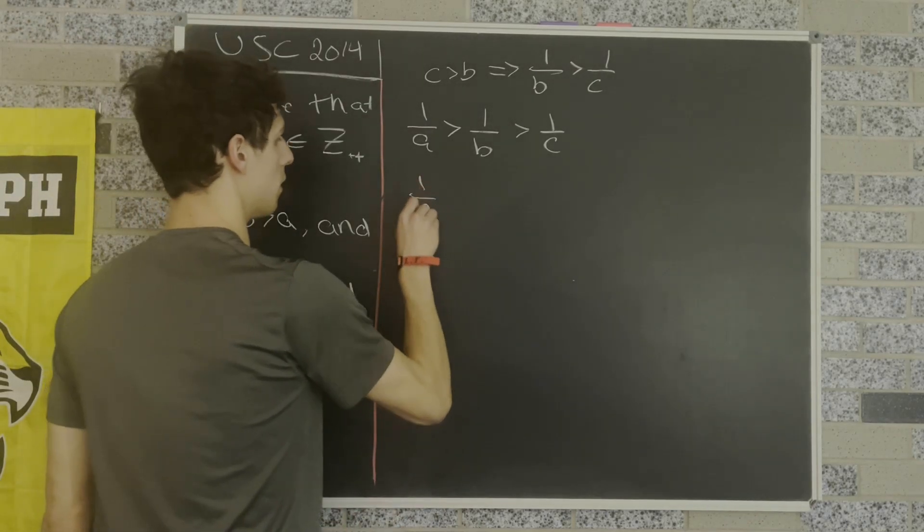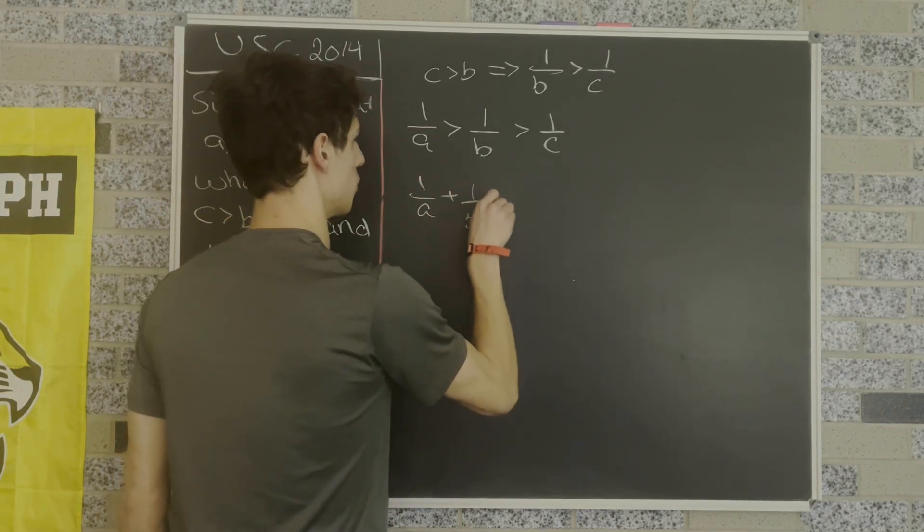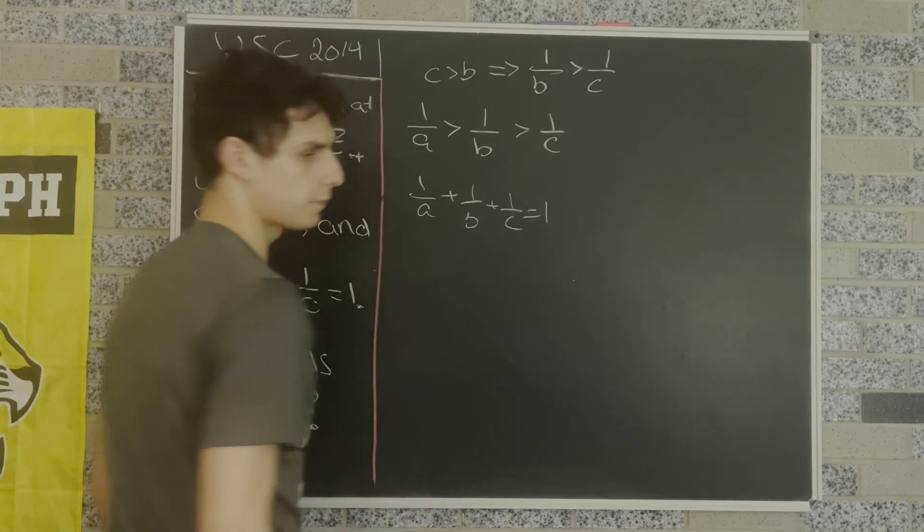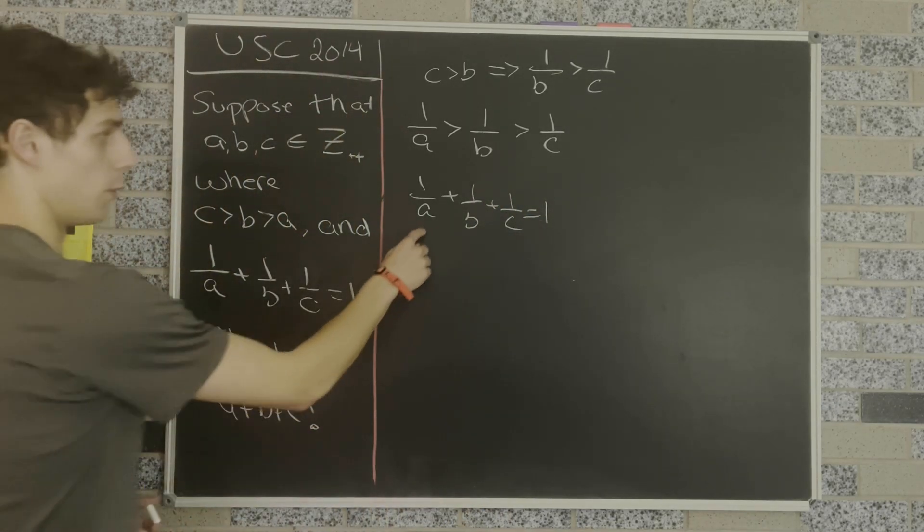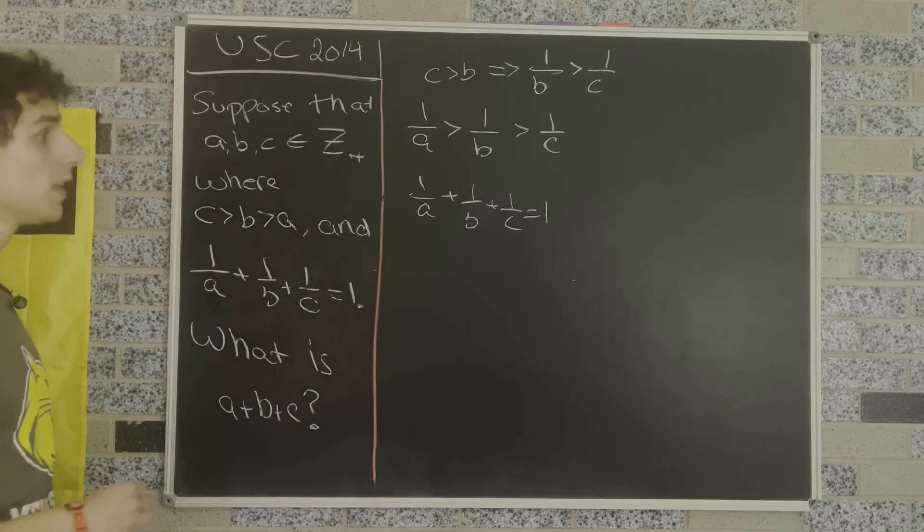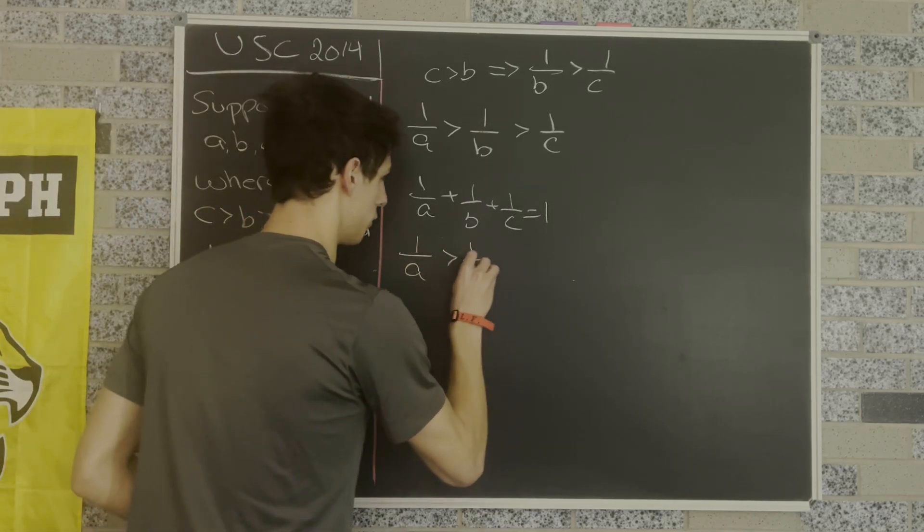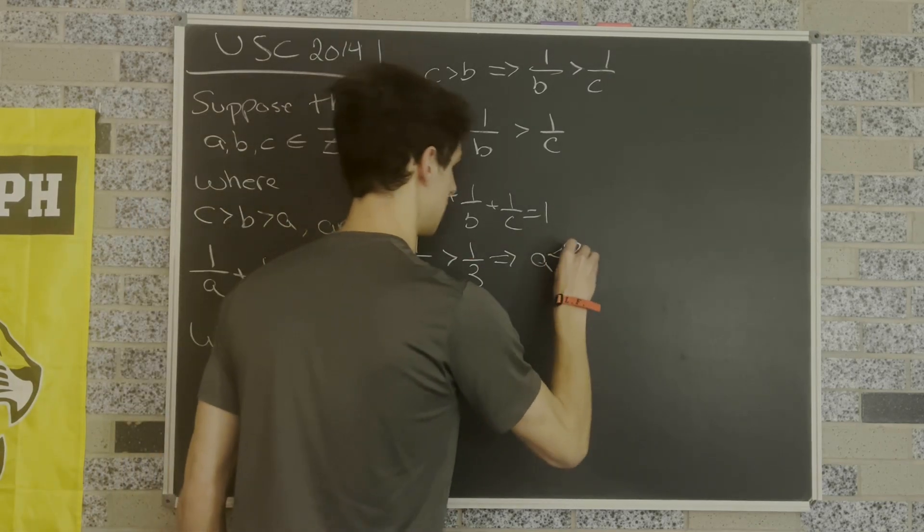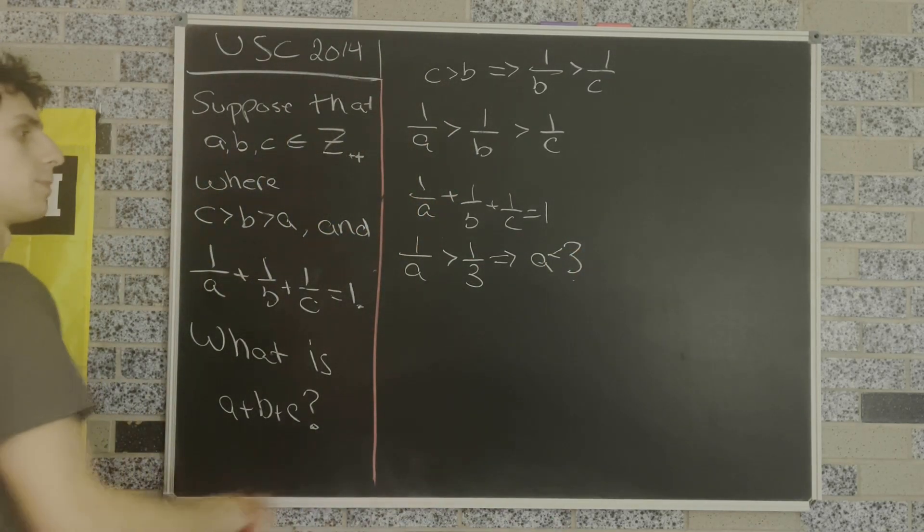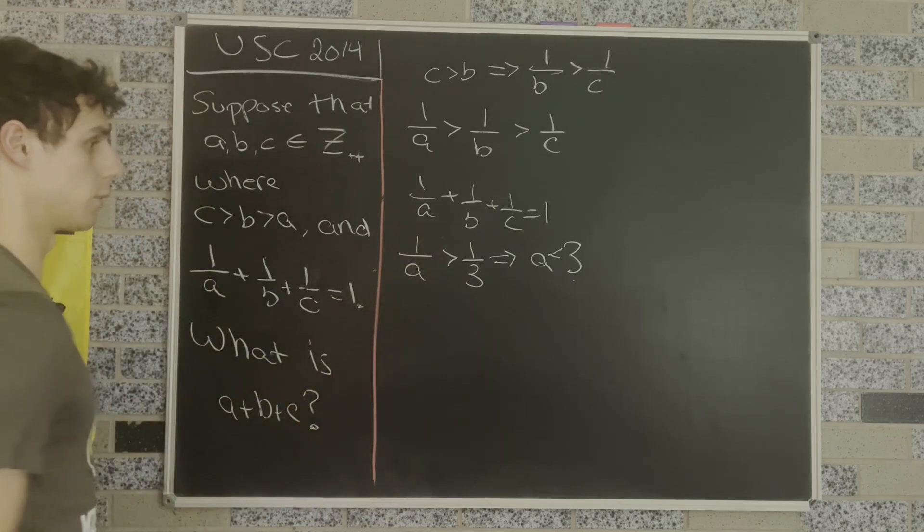We know that 1 over A plus 1 over B plus 1 over C equals 1, and if that's the case and we know that 1 over A is the biggest, that means 1 over A must be greater than 1 third. That means that A must be less than 3. That's by multiplying both sides by 3 and multiplying both sides by A.